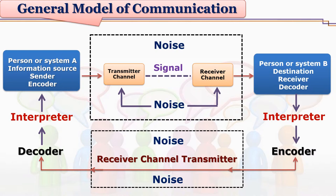Once the message is decoded by the person receiving it, he, she, or the system interprets the message. After interpretation, feedback is encoded. Again, the feedback gets transmitted by the transmitter and received by the receiver. Because we are using a channel here also, noise gets added. This feedback message is decoded by person A or system A and interpreted there — so encoding and decoding continues.